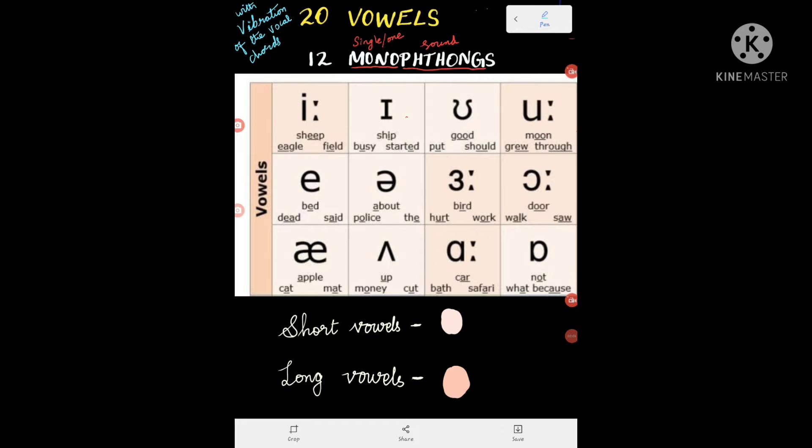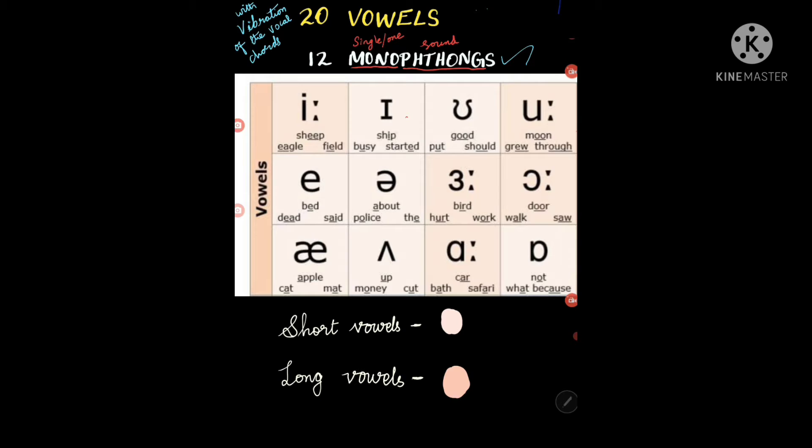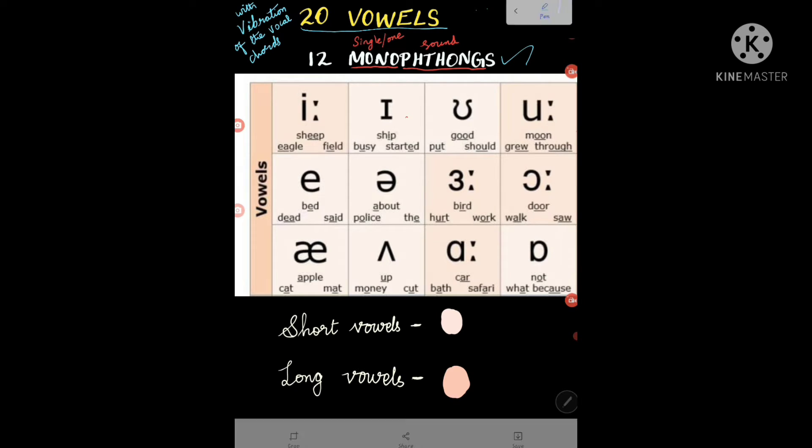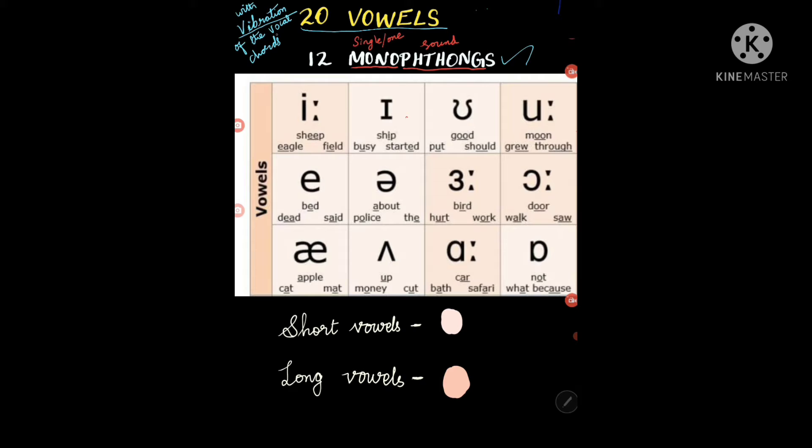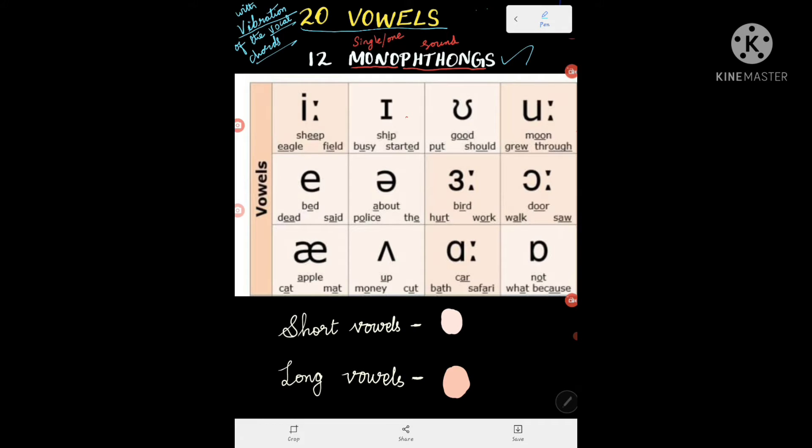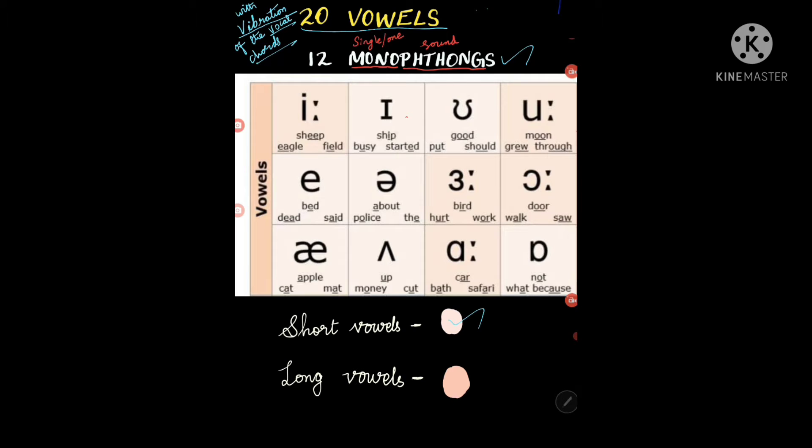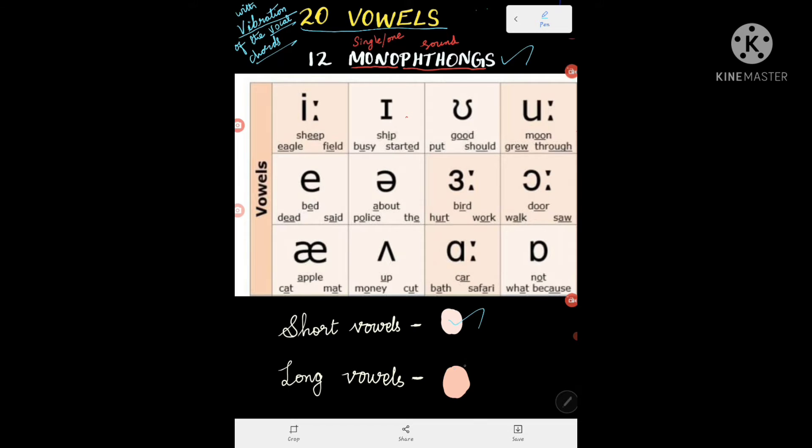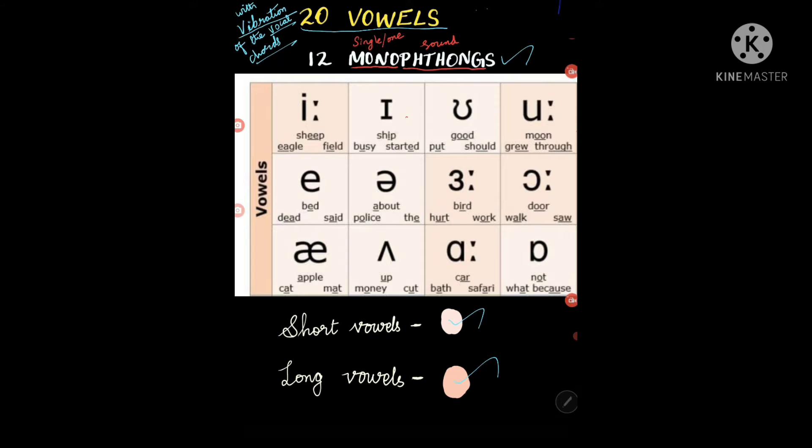Hi children, now let us see these 12 monophthongs. All these 20 vowels are voiced, which means they have a vibration in the vocal cords.